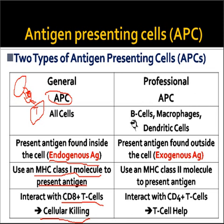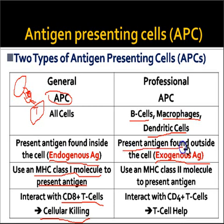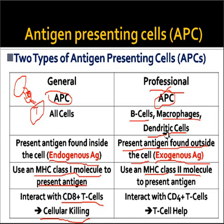Next are the professional APCs, which include B cells, macrophages, and dendritic cells. These are specific cells that are the major players in the immune system. They primarily process exogenous antigens — antigens which are present outside the cell. In this case, the MHC molecule involved is MHC class 2. Professional APCs like B cells, macrophages, and dendritic cells bind to MHC class 2 molecules together with exogenous antigens and present them to CD4+ T cells, which then activate either the TH1 or TH2 mediated pathway.